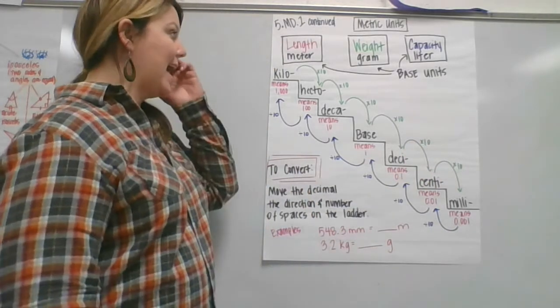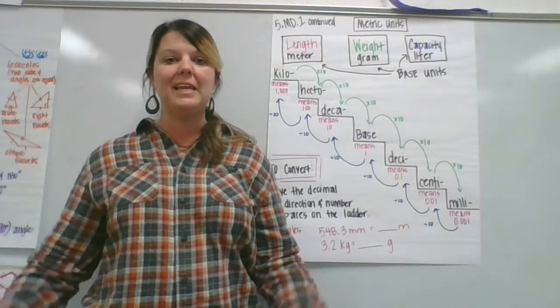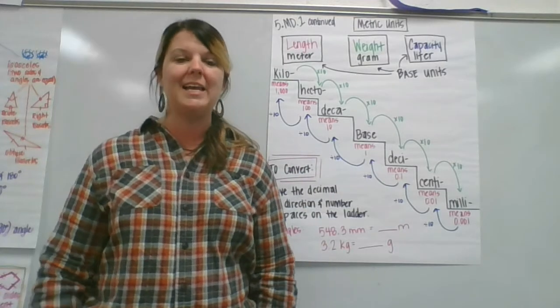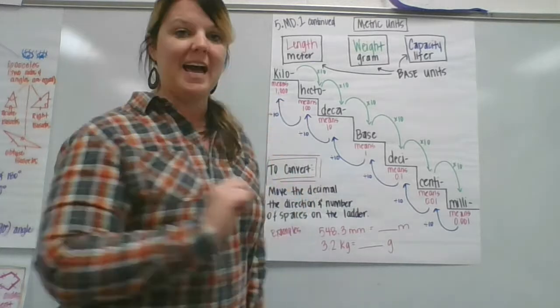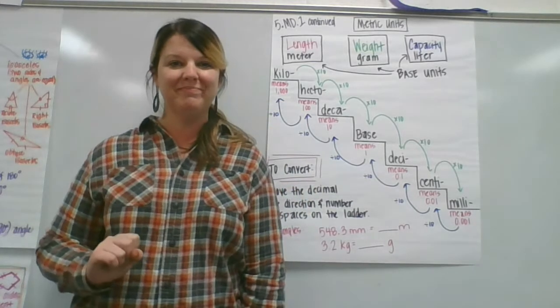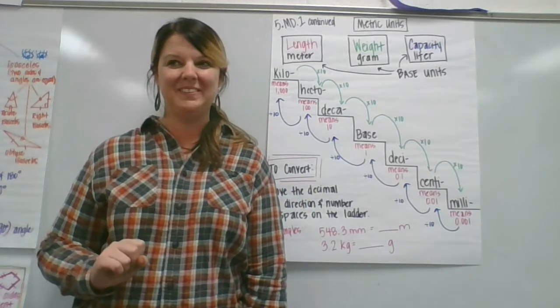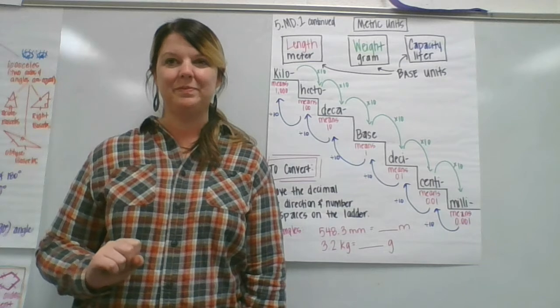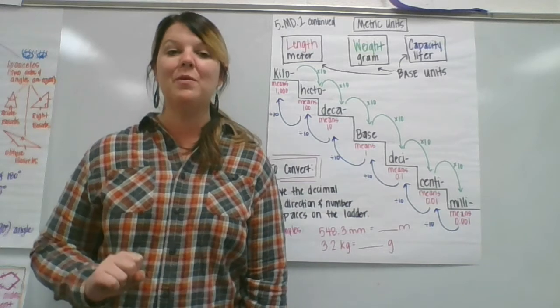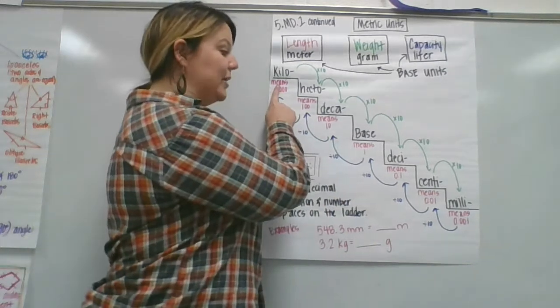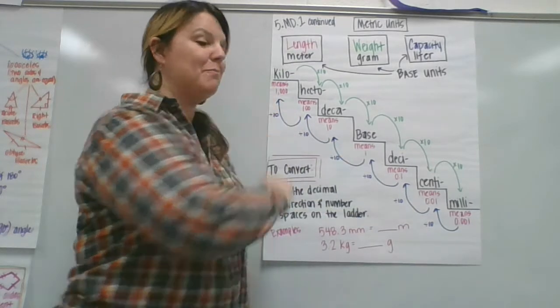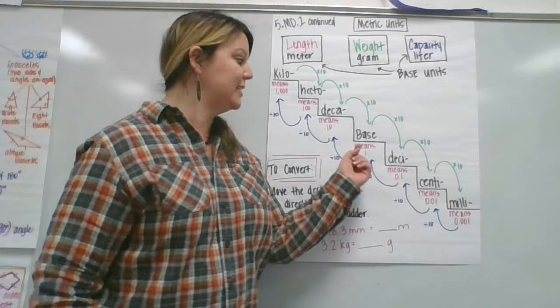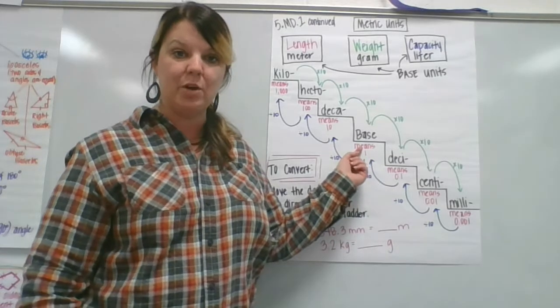So if I wanted to tell you how many meters were in three kilometers, I would know that inside every kilometer is 1,000 meters. So when you see that means 1,000, that means there's 1,000 of the base unit.